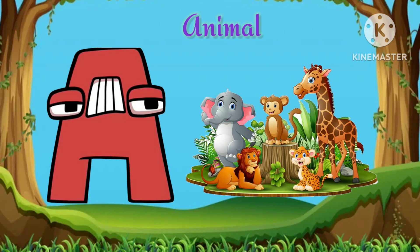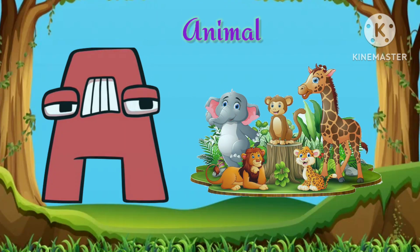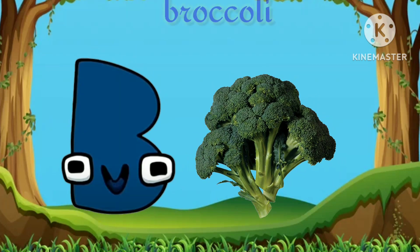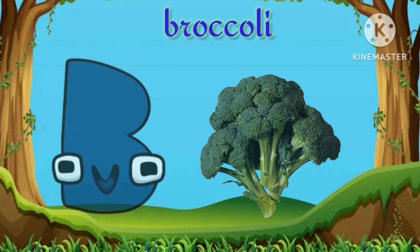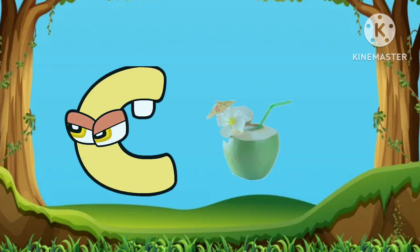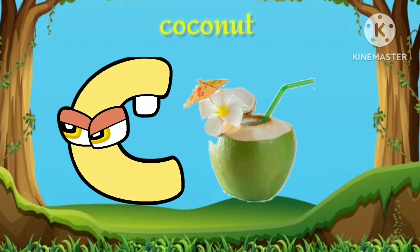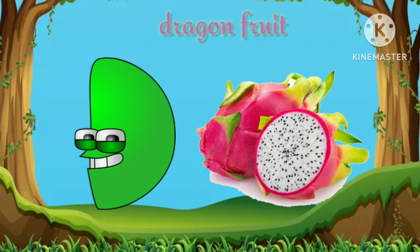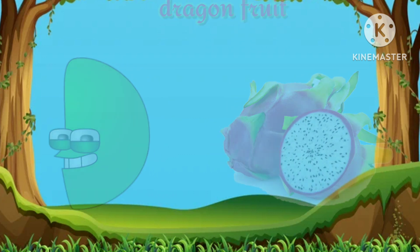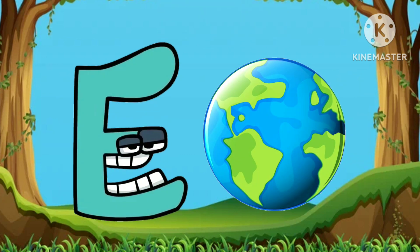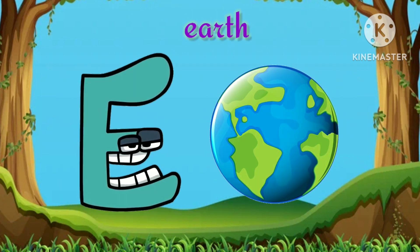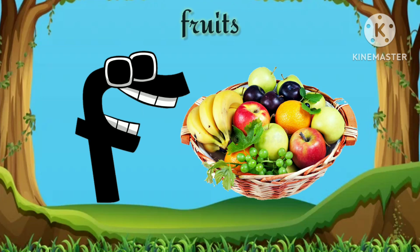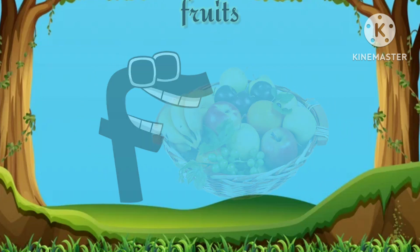A. A for animal. B. B for broccoli. C. C for coconut. D. D for dragon fruit. E. E for earth. F. F for fruits.